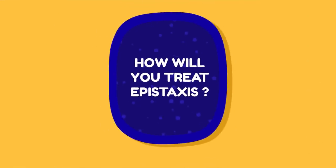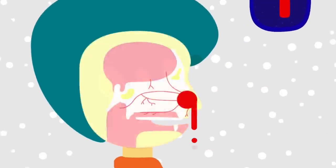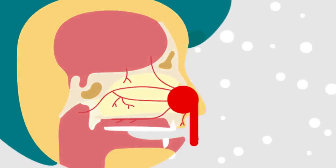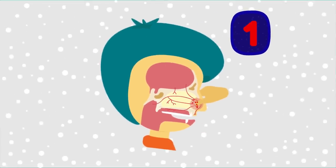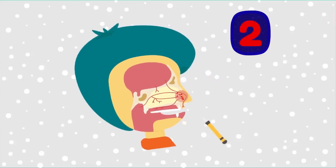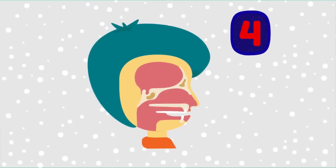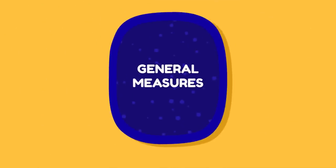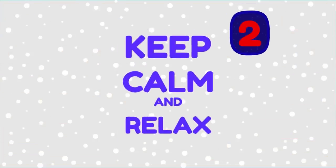Treatment: 1. First aid — most bleeding occurs from Little's area and can be controlled by pinching the nose with thumb and index finger for 5 minutes, compressing the blood vessels. 2. Cauterization — useful when the bleeding point has been located. 3. Anterior nasal packing. 4. Posterior nasal packing. General measures: make the patient sit up, reassure the patient, and keep a check on pulse and blood pressure.